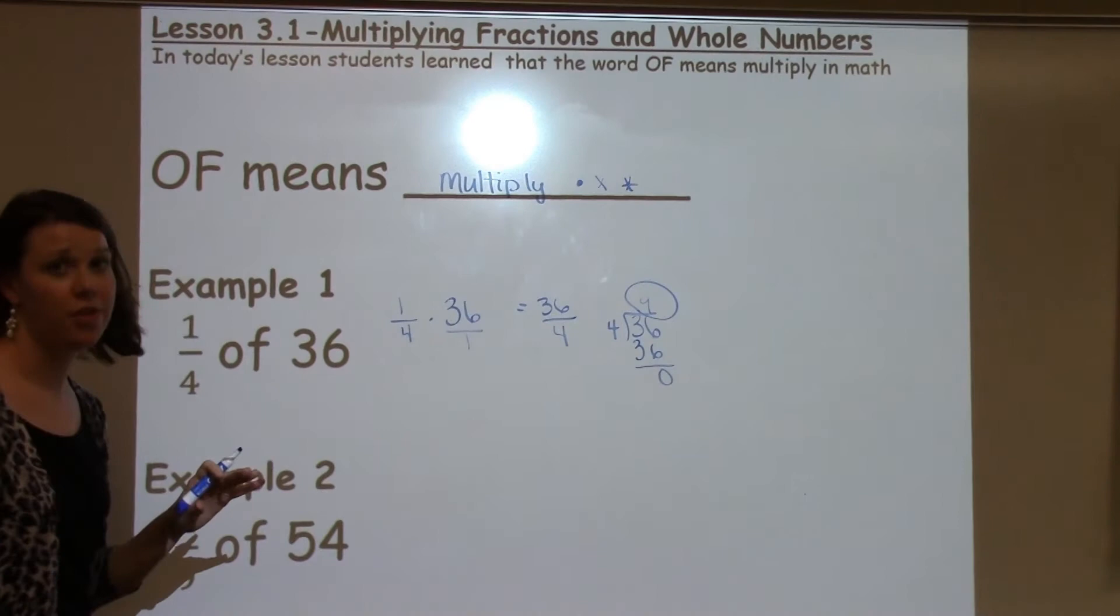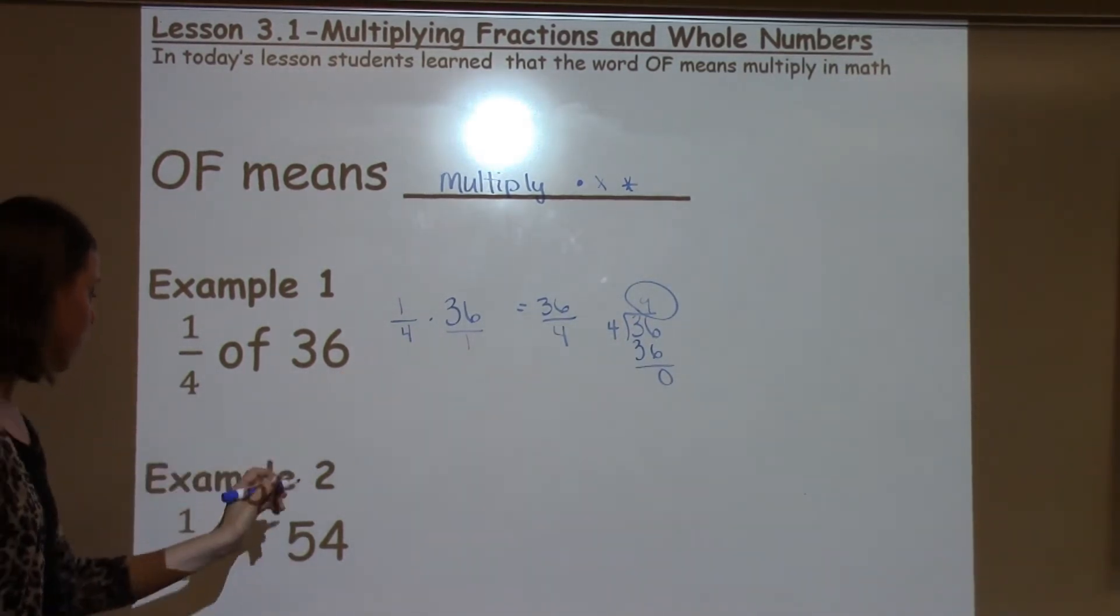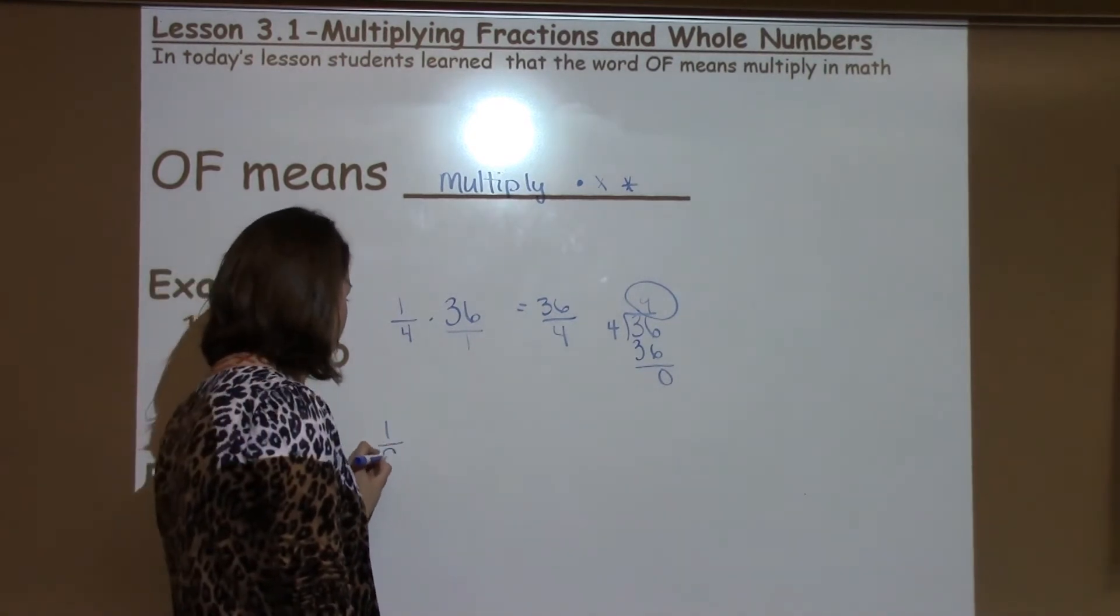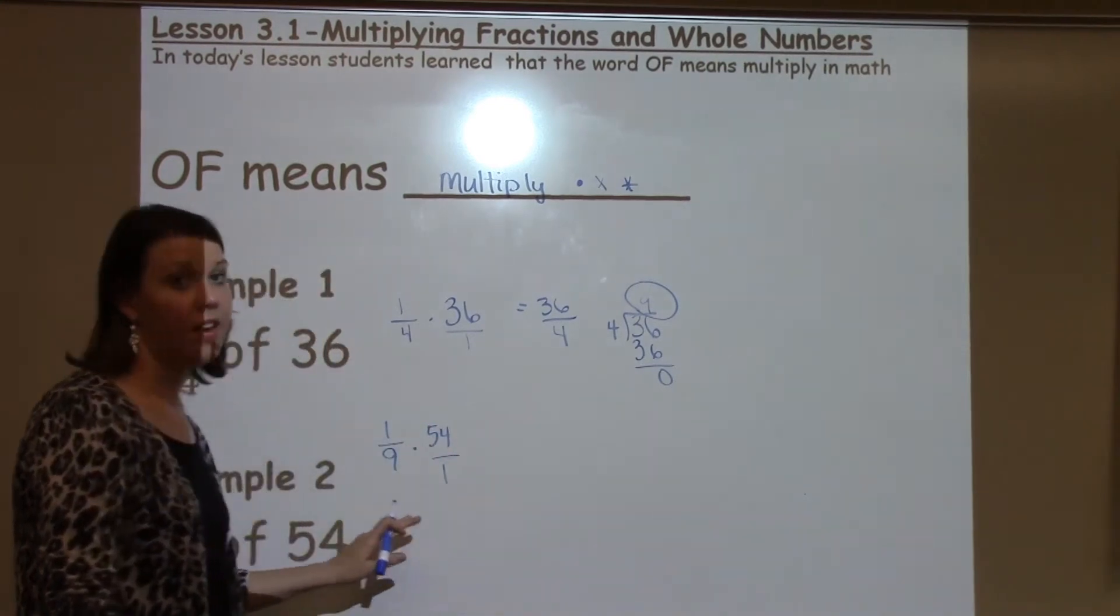Today, students are just working with unit fractions, so all of the fractions are going to have a 1 in the numerator. Now, this one says 1 ninth of 54. We can set it up just like we did with the first one, so we can write 1 ninth times 54 over 1, and we can solve it.